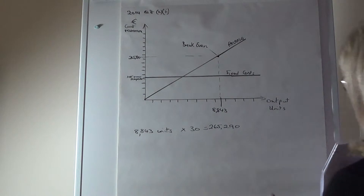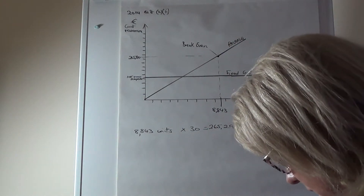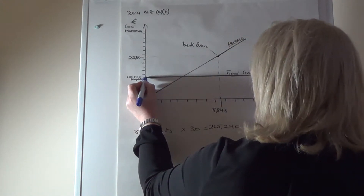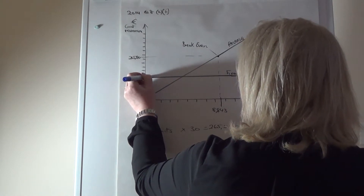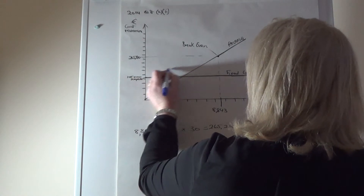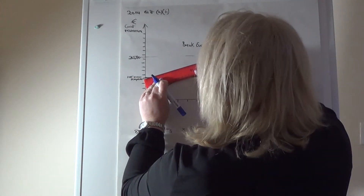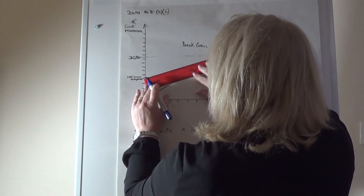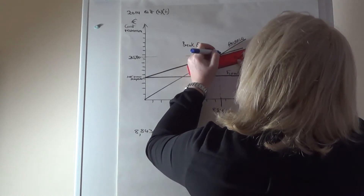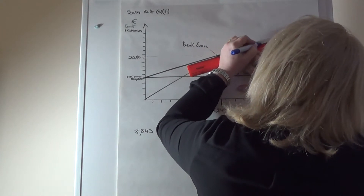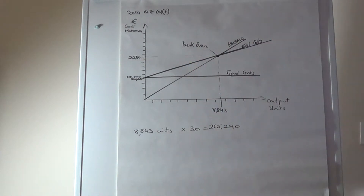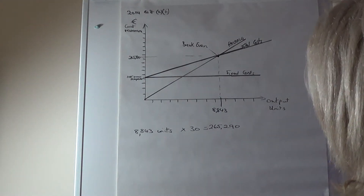The total costs line starts at the fixed cost level on the y-axis, because even at zero units you still have fixed costs to pay. Your starting point for the total costs line is on the fixed cost line, and it then passes through the break-even point. Extend it a little further and label it as total costs.